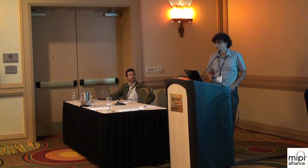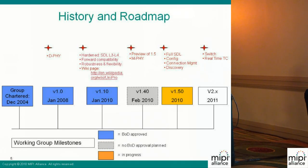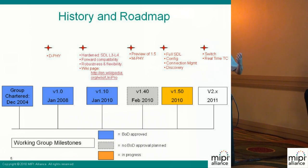Now, the history and roadmap of UniPro. The MIPI working group was chartered at the end of 2004, and we got the first board-approved specification in January 2008. This specification was based on D-PHY. The next specification was approved by the board in January 2010 — version 1.1. It has a hardened SDL layer 3 and layer 4 model, meaning we produced not only the text specification but also the formal modeling for layer 3 and layer 4. It also has forward compatibility features and more robustness and flexibility compared to version 1.0.